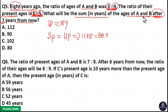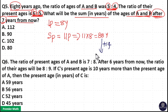We need the sum of ages of A and B after 7 years. After 7 years, A increases by 7 and B increases by 7, so the total increment is 14 years. Therefore, the sum of ages of A and B after 7 years is equal to 88 plus 14, which is 102 years. So option C is your answer.